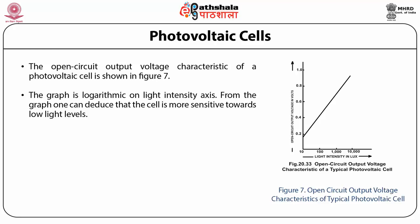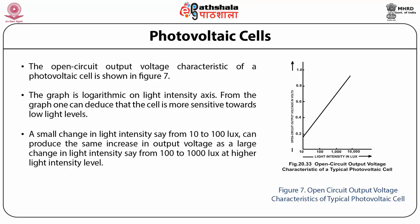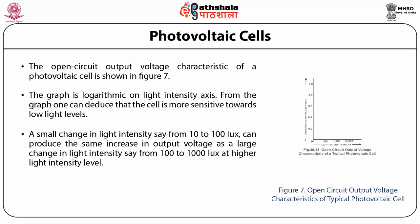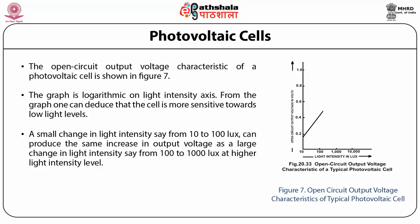From the graph, one can deduce that the cell is more sensitive at low light levels. A small change in light intensity from 10 to 100 lux can produce the same increase in output voltage as a large change from 100 to 1000 lux at higher light intensity levels.